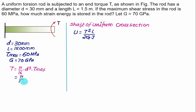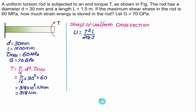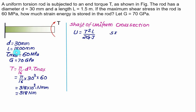So we have (π/16), diameter equal to 30, cubed, and maximum shear equal to 60. Solving this equation, you will get torque equal to 318 × 10³ N·mm, which is the same as 318 N·m. In the energy equation, all values will be expressed in SI units. So use torque equal to 318 N·m, length equal to 1.5 m, G equal to 70 × 10⁹ Pa, and polar moment of inertia J = (π/32) × d⁴.